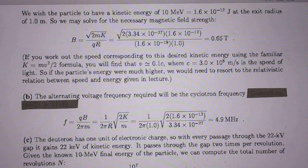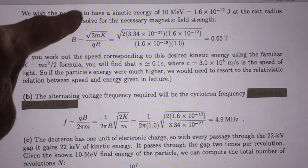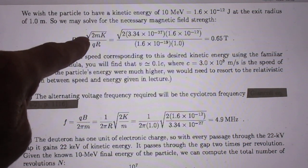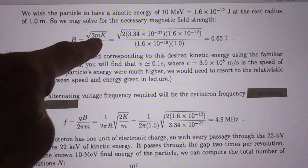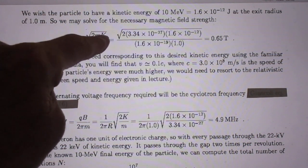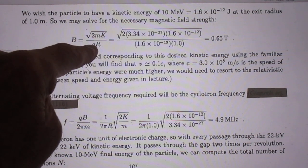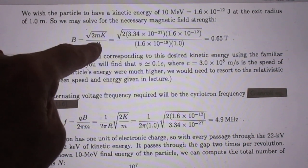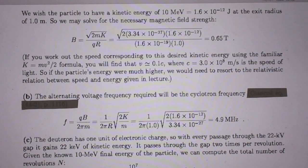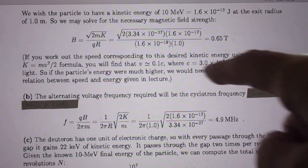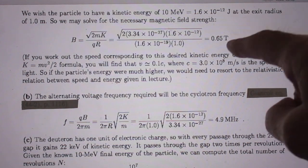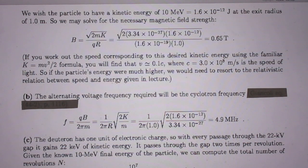So we may solve now for the necessary magnetic field strength. I derived this in lecture 13 of 802. M is the mass of the deuteron, K is the kinetic energy, Q is the charge of the deuteron, and R is the radius of that circle.